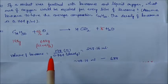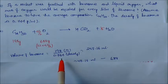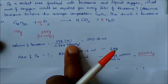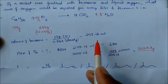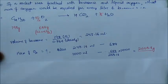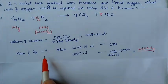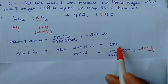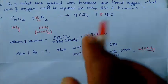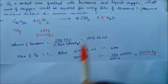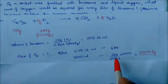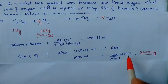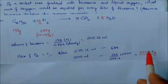We find the volume of kerosene using mass divided by density. For 259.16 mL of kerosene, 688 grams of oxygen is required. Since they ask per liter, we calculate: 688 divided by the volume of kerosene, multiplied by 1000, to get the required mass of oxygen per liter.